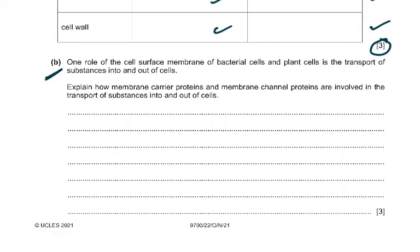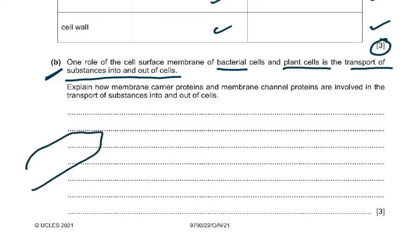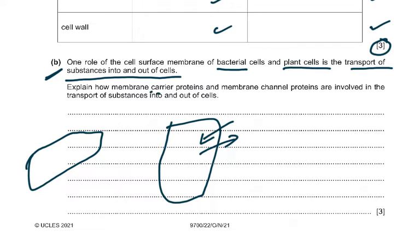Part B: one role of the cell surface membrane of both bacterial and plant cells is transport of substances into and out of the cell. The question asks you to explain how membrane carrier proteins and membrane channel proteins are involved in transport. Read the question carefully and underline the keywords.